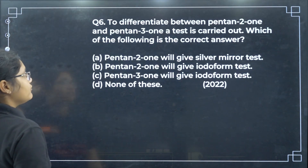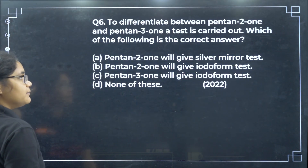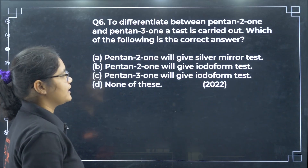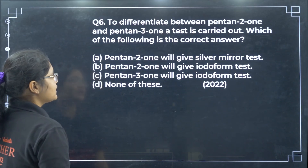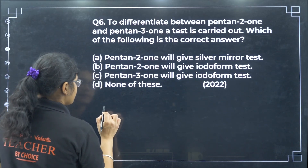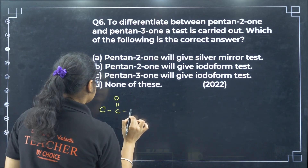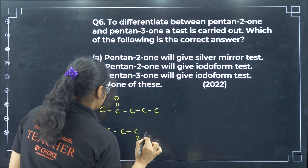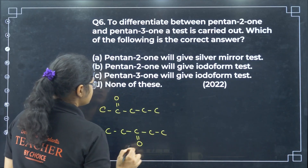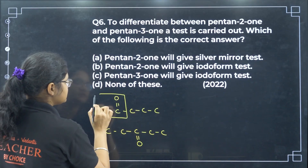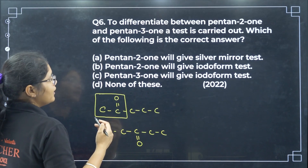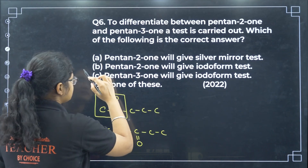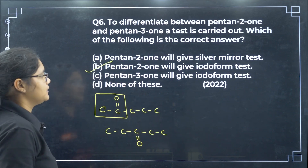To differentiate between pentan-2-one and pentan-3-one: pentan-2-one has the CH3CO group, which gives a positive iodoform test. Pentan-3-one does not have a CH3CO group so it will not give positive iodoform test. That is option B.